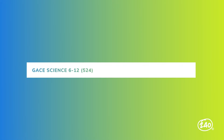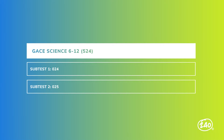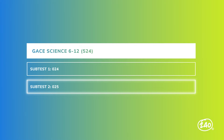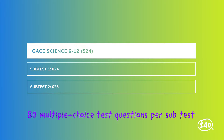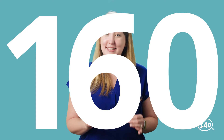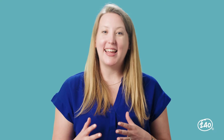The GACE Science 524 consists of two subtests. Subtest 024 covers the nature of science and life science, and then 025 gets into physical science and earth and space. Each subtest consists of 80 multiple choice questions, and you can take each subtest on its own or you can take the two together. Buckle up if you are taking these two together, because that is 160 multiple choice questions to complete.